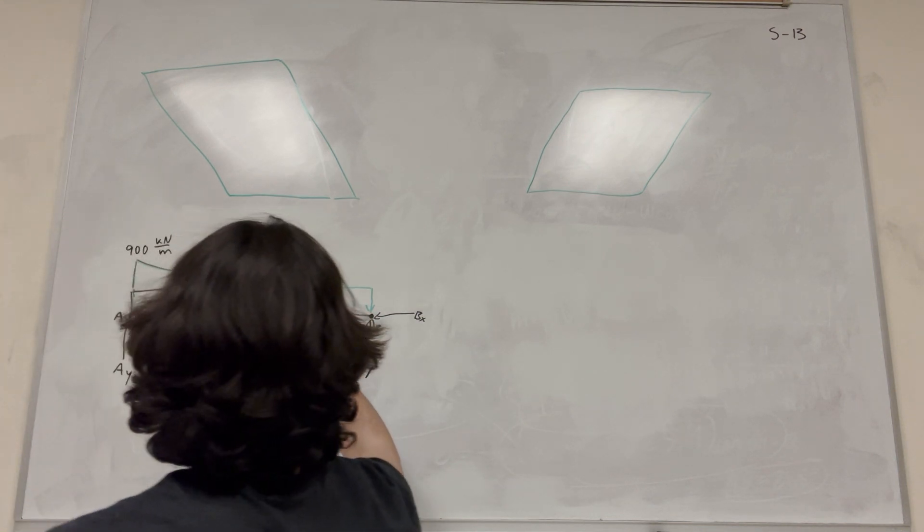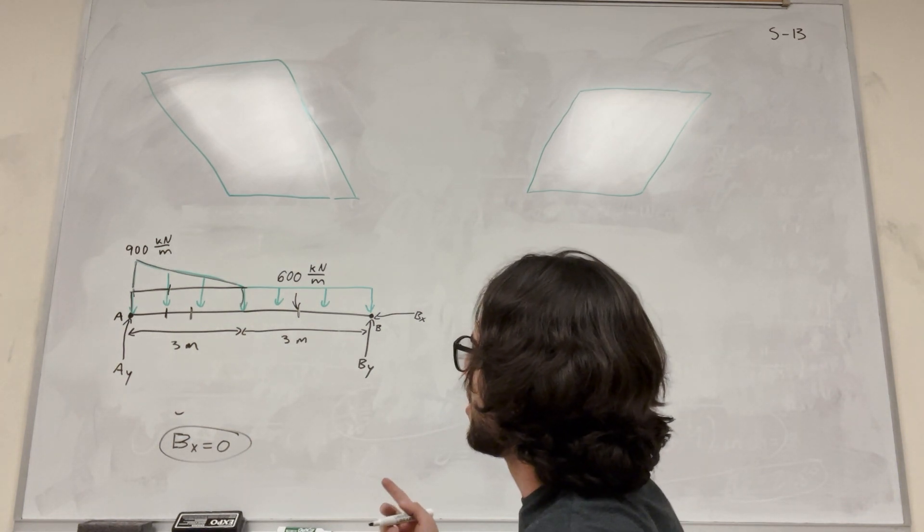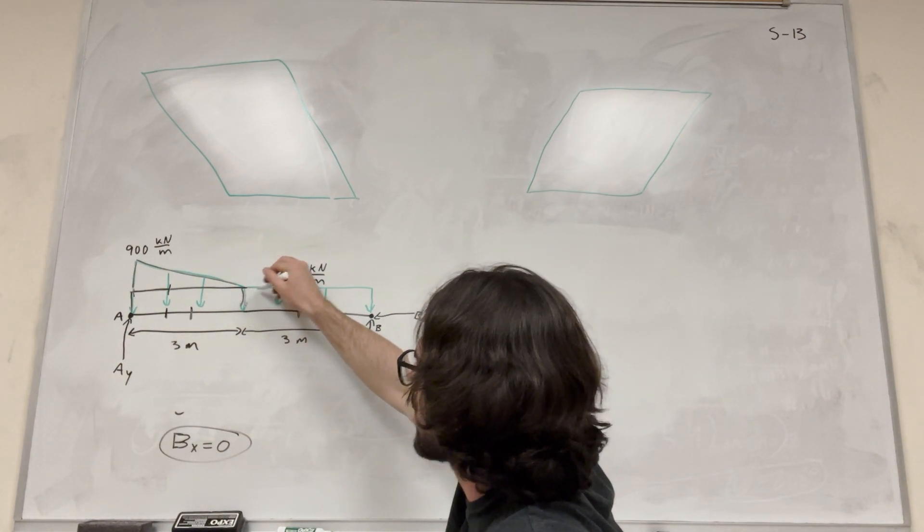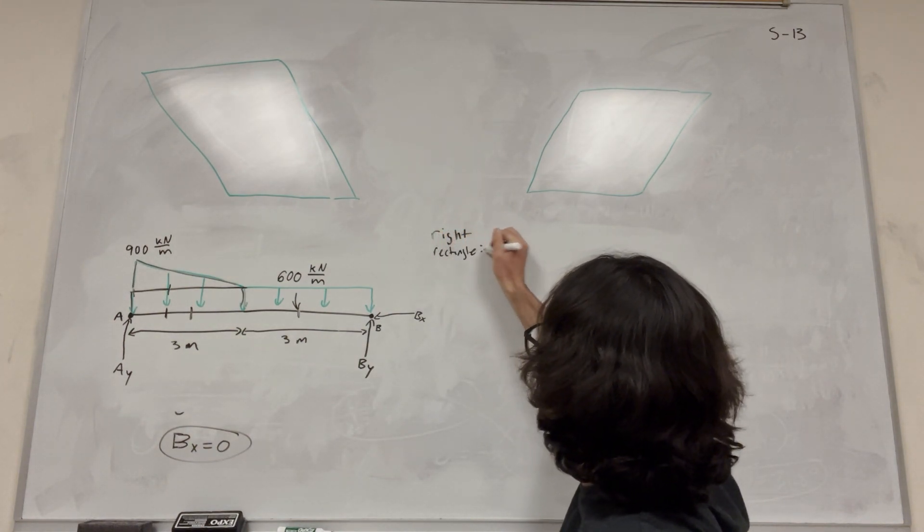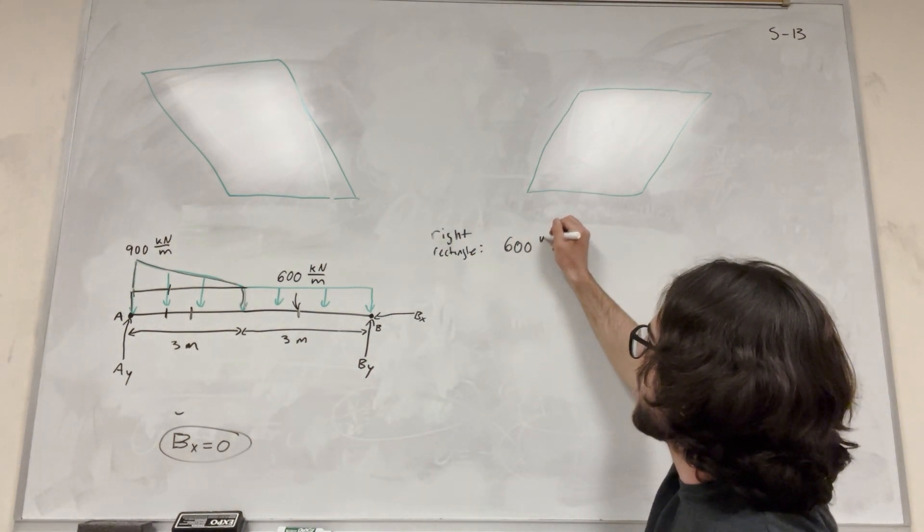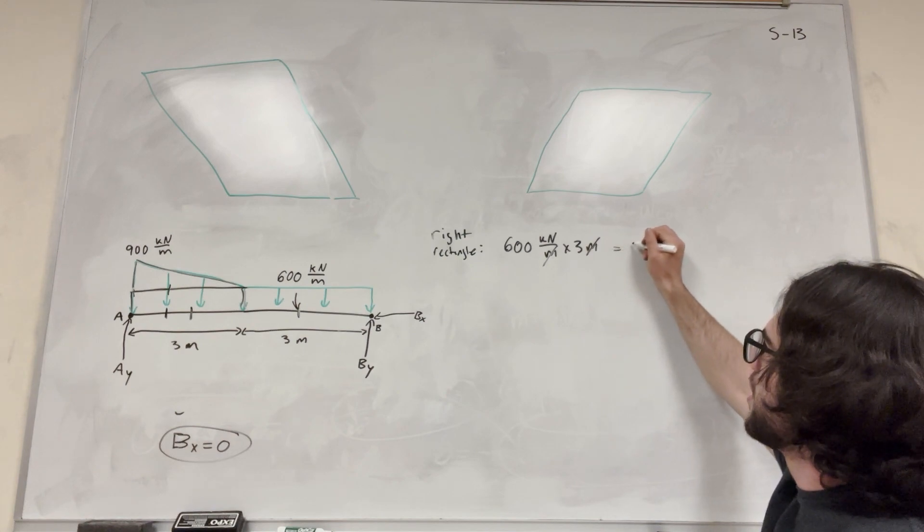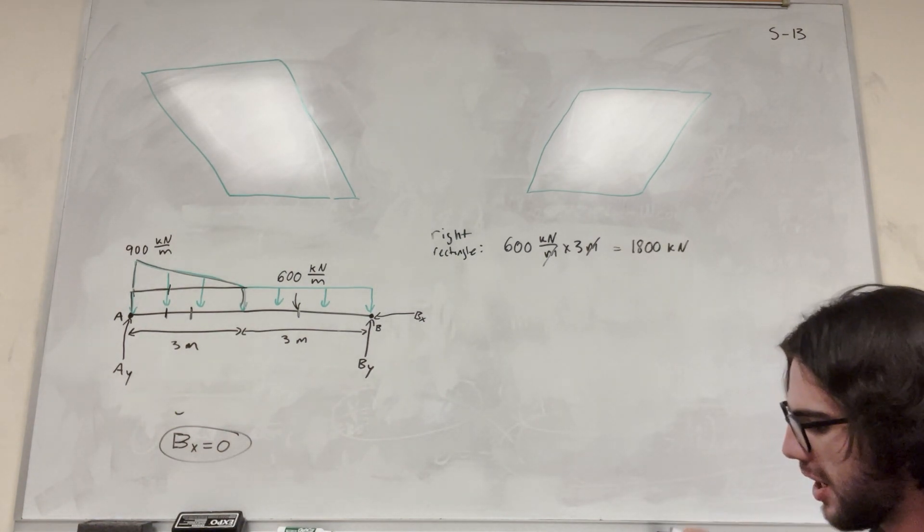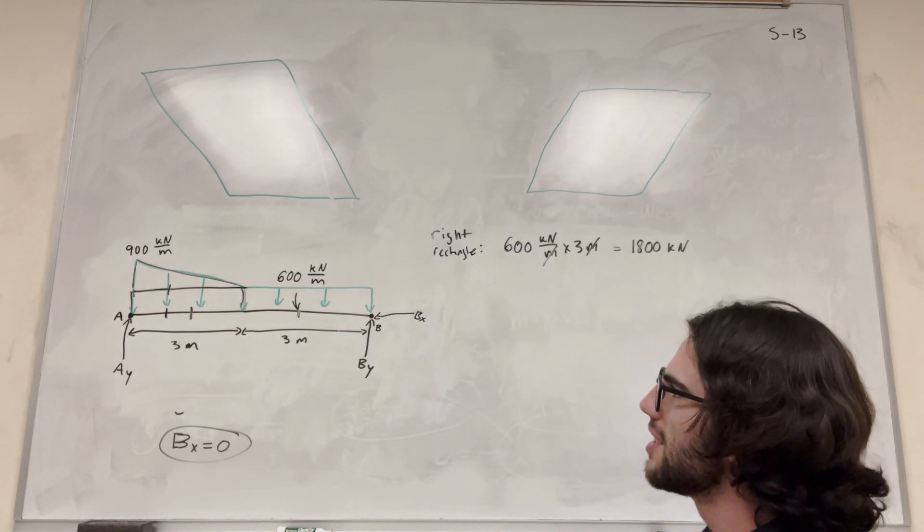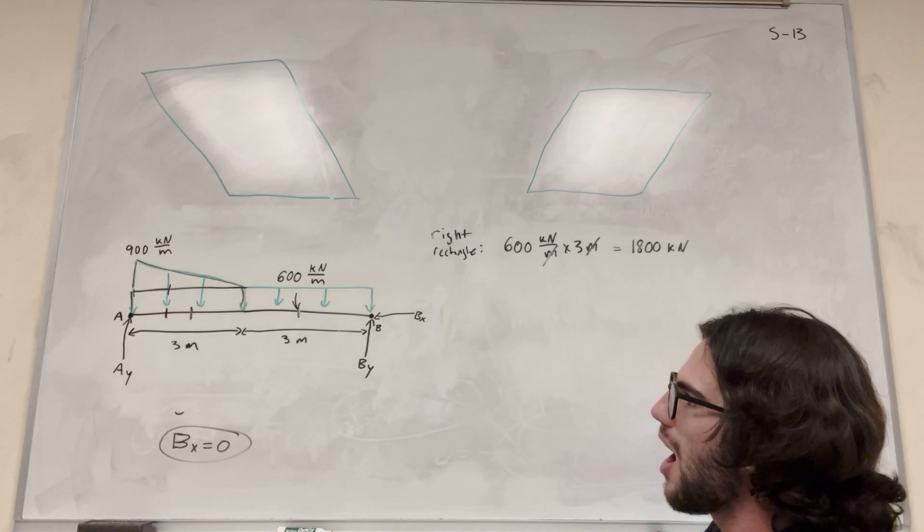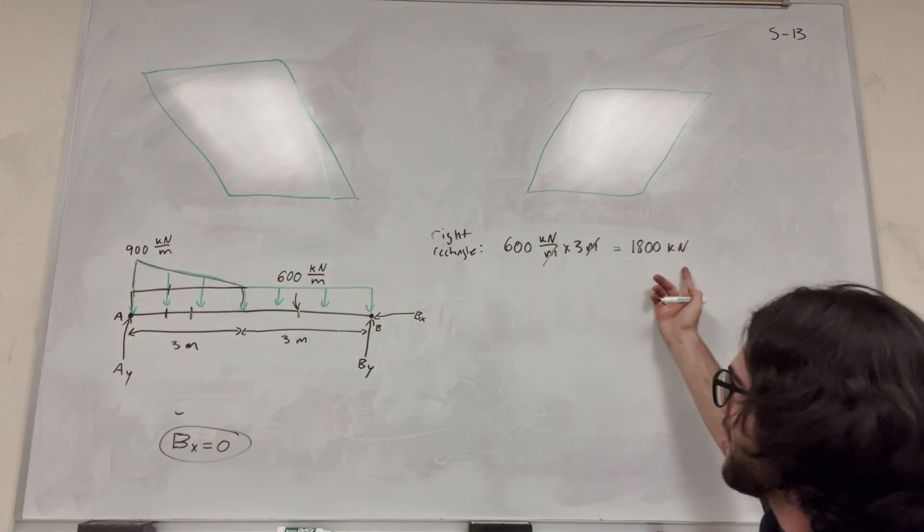So now we know where these three forces act, and we need to find the magnitude of them. Let's start with the 600 one. So we have this right rectangle. We have a 600 kilonewton per meter distributed load, and it acts for three meters. So the meter and meter are going to cancel out, and you get that it's 1800 kilonewtons. Should we just do this in kilonewtons? Because I started doing it in kilonewtons. Screw it. We're doing kilonewtons today, okay? So 1800 kilonewtons is the right rectangle.